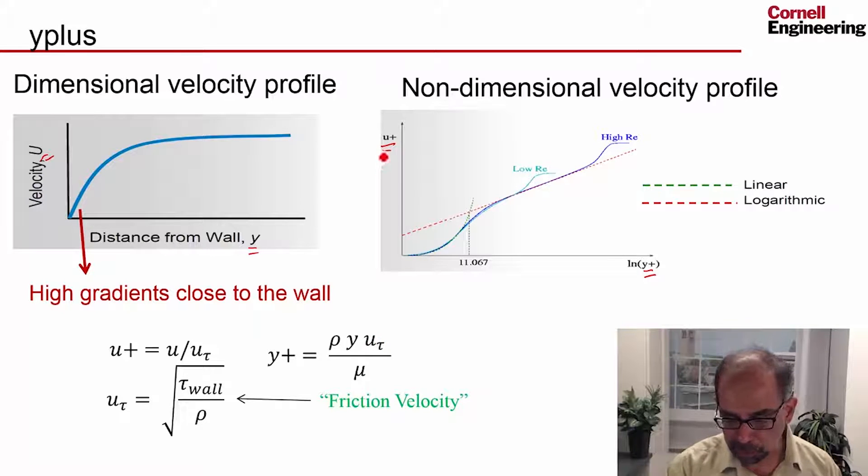And if you plot U plus over log Y plus, in the log layer, you get this logarithmic variation. So when you're plotting it versus log Y plus, you'll get a straight line. So this would be called the log layer. And below a Y plus of about 11, you're in the viscous sublayer. Okay, so that's in the viscous sublayer. And above that, you're in the log layer.